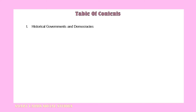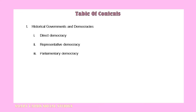The historical governments and democracies that we will be covering in this tutorial are direct and representative democracies, parliamentary democracies, presidential democracies, and monarchies.